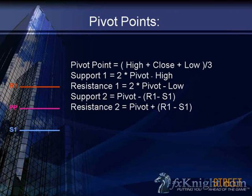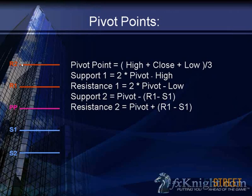We go from the middle out. Under S1 we have S2; above R1 we have R2. If you subtract S1 from R1 and subtract that total from your central pivot point, you get the next ledge lower — S2. And if you add that same difference above the pivot point, you get R2. So R2 is above and S2 is below.